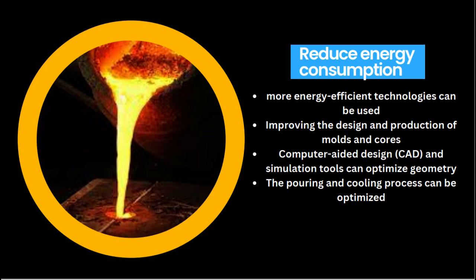Energy consumption in the industry is primarily influenced by the efficiency of melting and heat treating processes. Implementing new processes and practices can lead to significant energy savings and a reduction in greenhouse gas emissions. The first area for optimization is sand preparation, involving drying and conditioning. More energy-efficient technologies like fluidized bed dryers or thermal reclamation systems can be used, and controlling moisture content in the sand avoids excessive energy costs during drying or poor quality molds. Sand reclamation can also be implemented to reuse sand and lower energy consumption.